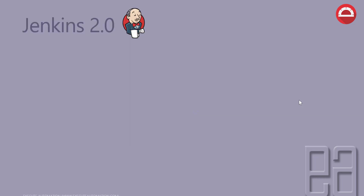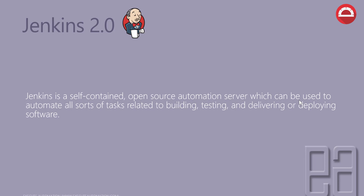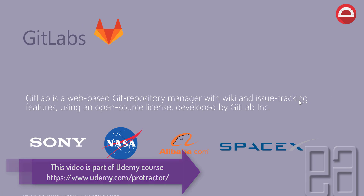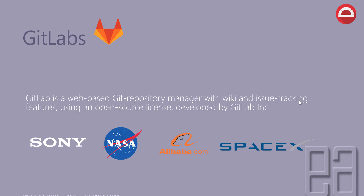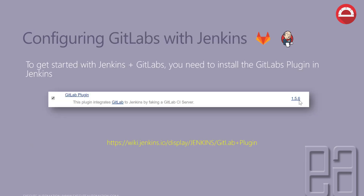Jenkins 2.0 is a self-contained open source automation server which can be used to automate all sorts of tasks related to building, testing, and delivering or deploying software. This is the continuous integration system we're going to use for our Protractor testing. For source control we're using GitLab — a web-based git repository manager. Don't confuse it with GitHub; GitLab is completely different. GitHub is currently acquired by Microsoft. GitLab is used by companies like Sony, NASA, Alibaba, and SpaceX.